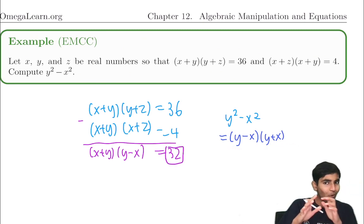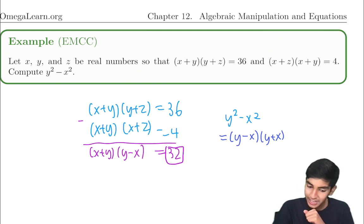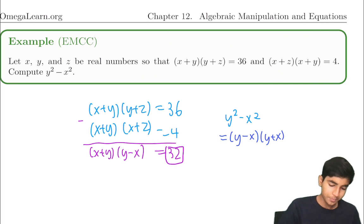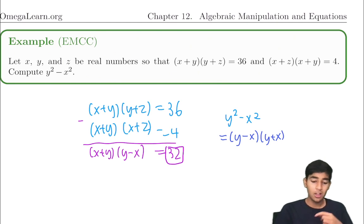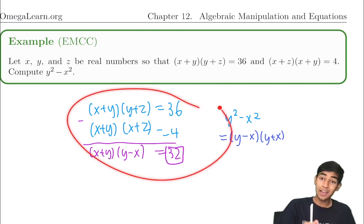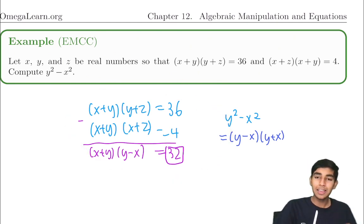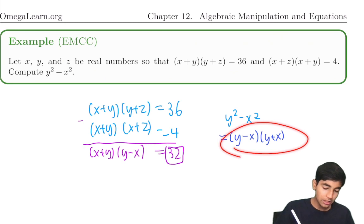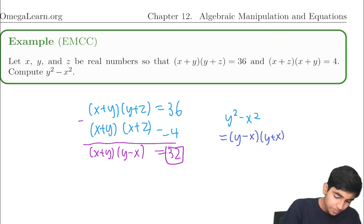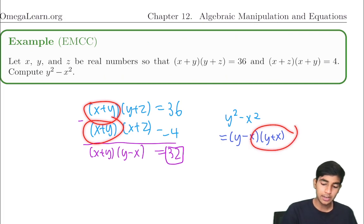Although we just did one simple step, figuring out to do this was definitely not easy. You have to notice the patterns, and despite it being such a tricky-seeming problem, one simple yet powerful step completely trivialized it. The key ideas: look for factorizations, and then look for patterns.